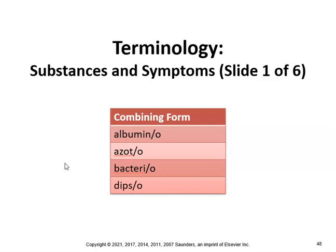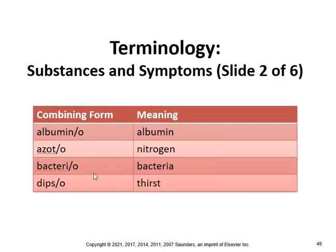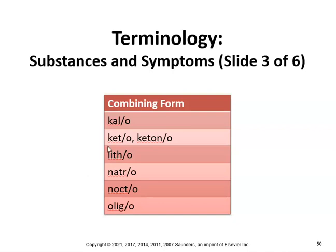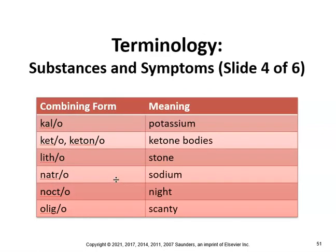Dips gives us polydipsia, which is a condition of increased thirst — so next time you're very thirsty, you can say you're experiencing polydipsia. Cal means potassium, keto refers to ketone bodies — you've heard of ketosis.